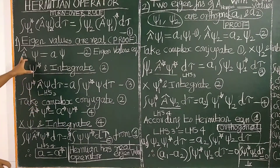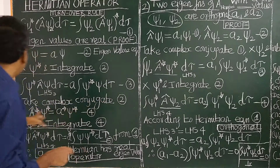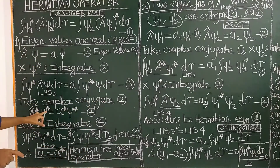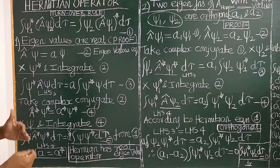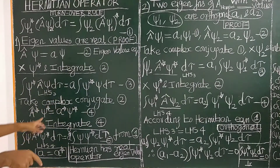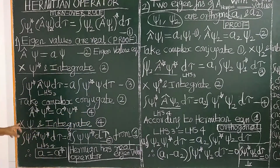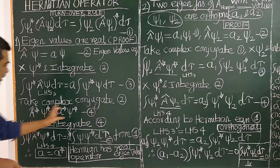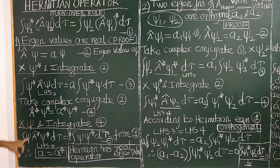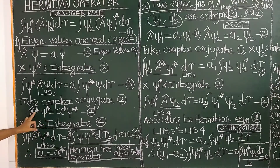Now take the complex conjugate of equation 2. Taking complex conjugate: A-cap-star psi-star equals A-star psi-star, where psi-star is the complex conjugate of the wave function psi. Then multiply equation 4 by psi and integrate all over space, giving: integral psi (A-cap-star psi-star) d-tau equals A-star integral psi psi-star d-tau.